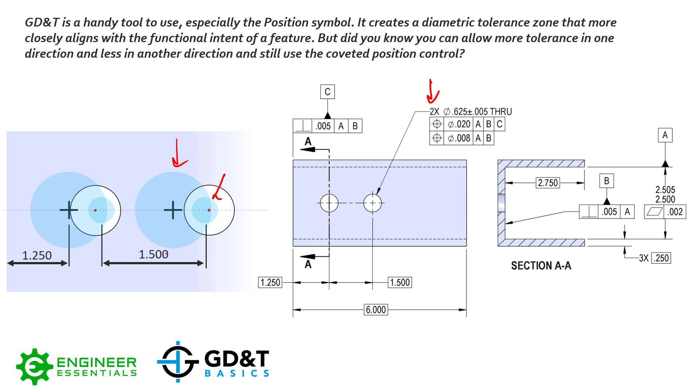But again, since we are controlling it as a pattern, these tolerance zones, these two small ones, have to remain 1.5 inches away from each other exactly. So you have to be able to align the axis inside both tolerance zones for both holes simultaneously in order to pass both of these specifications.